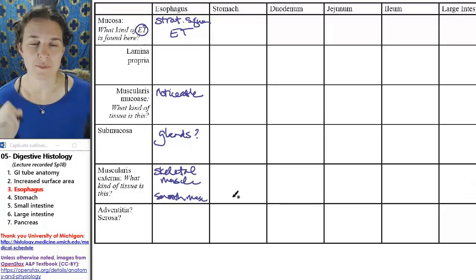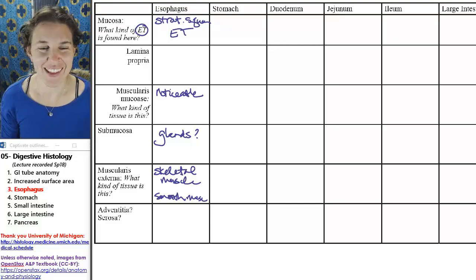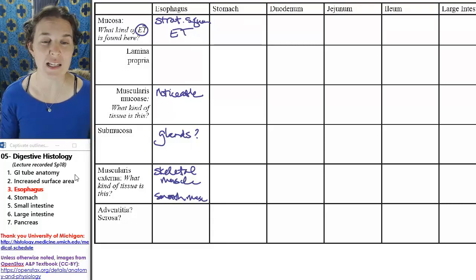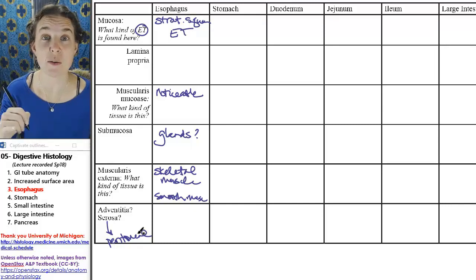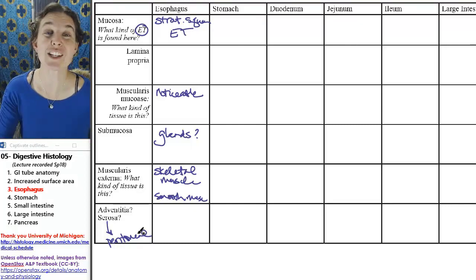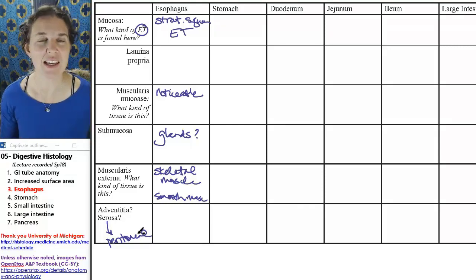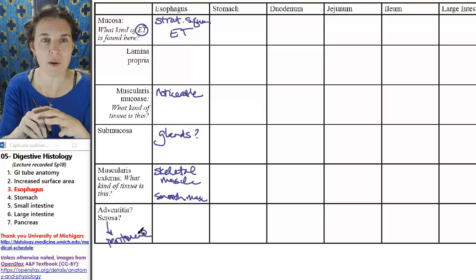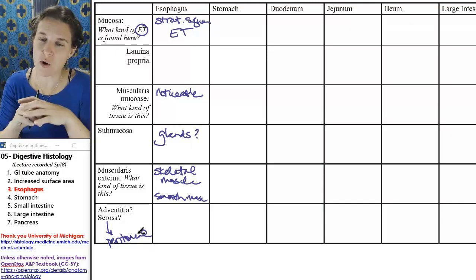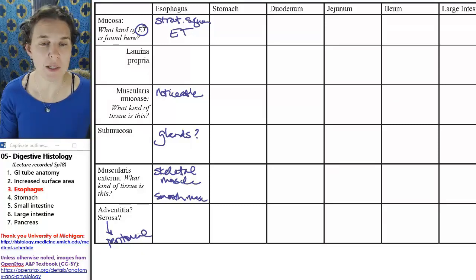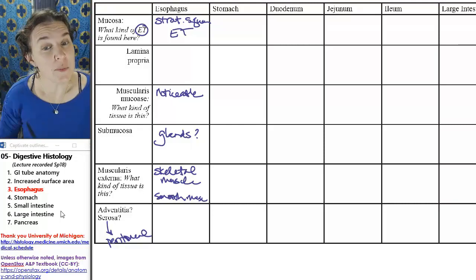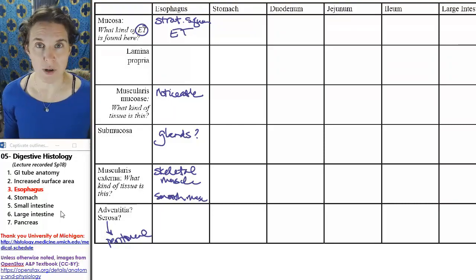I told you that adventitia was found somewhere and serosa was found somewhere else. Serosa is peritoneal. If the structure is found in the peritoneal cavity, if it is intraperitoneal, then the outermost layer of the tube is going to be serosa. If it is not in the peritoneum, tell me about the esophagus. Is it in the peritoneum?